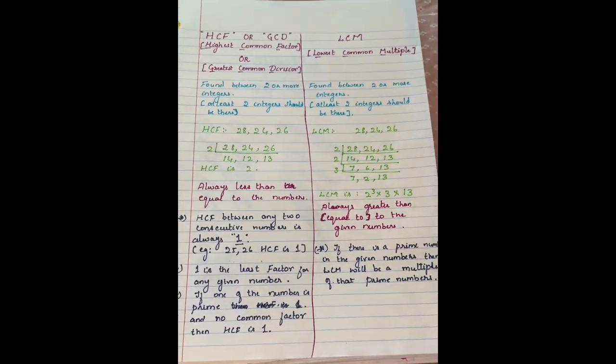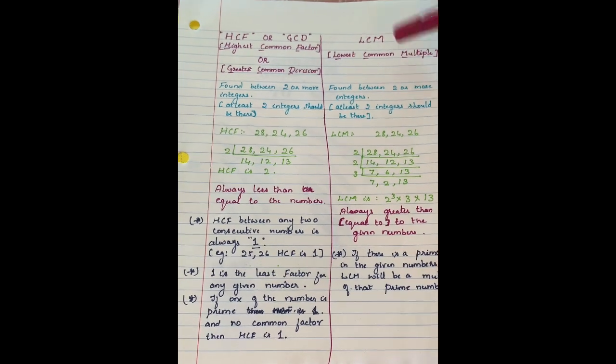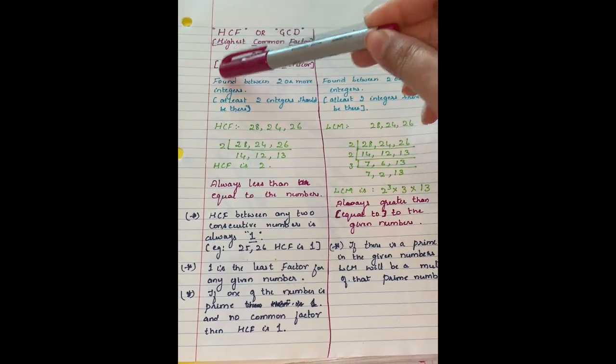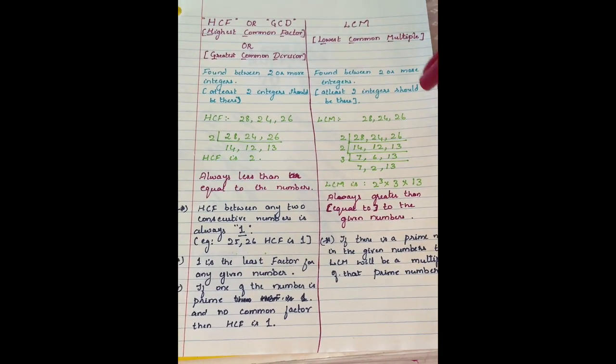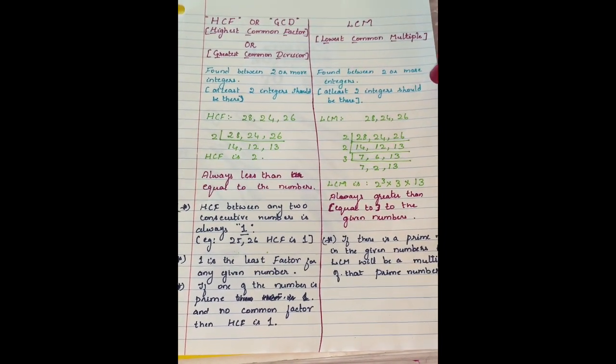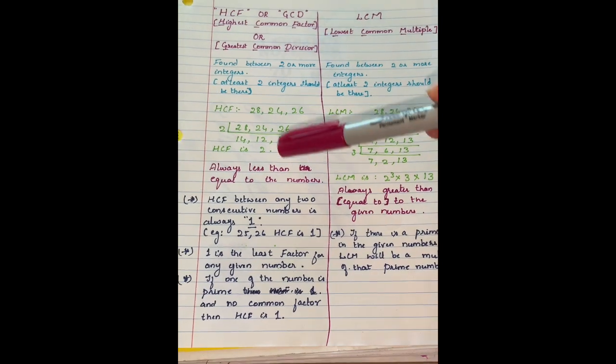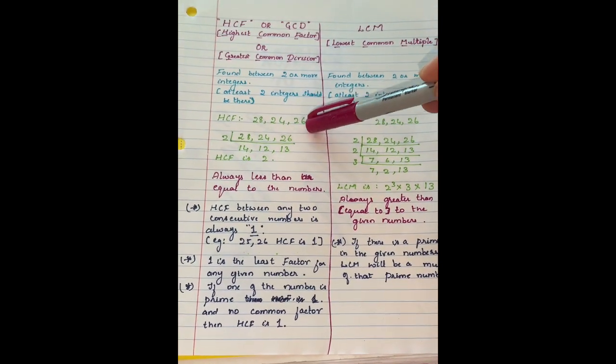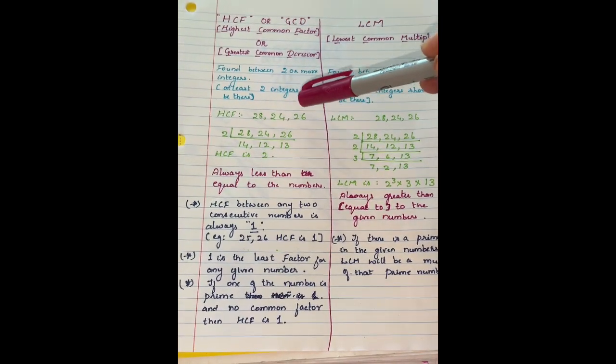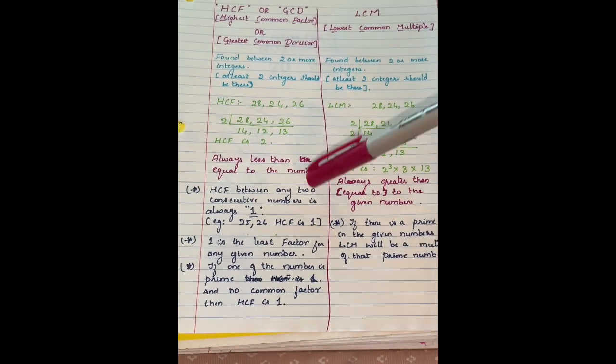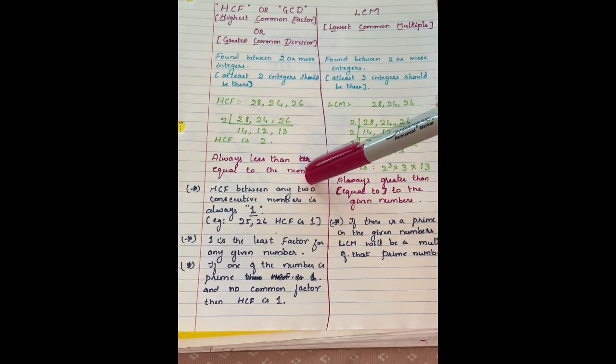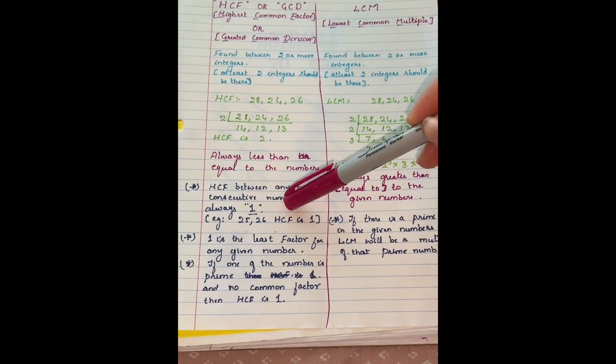It is found between two or more integers. LCM is found between at least two integers. HCF of 22, 24, 26 is 2. HCF between any two consecutive numbers is always one because there is no common factor.